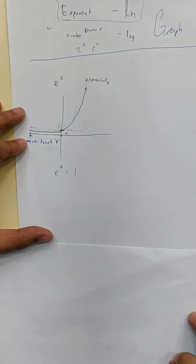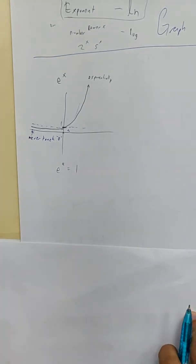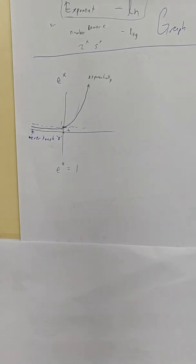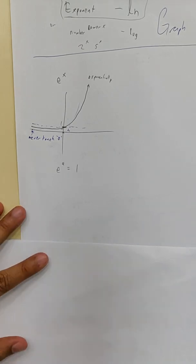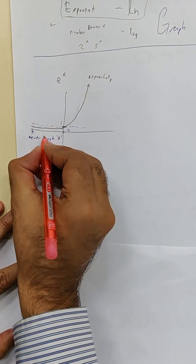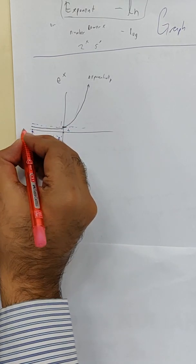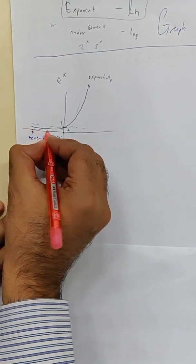So, the characteristics of e^x: the y-intercept is one, it rises exponentially, and it never touches zero. There's a new term for you — the line it never touches. That line is the forbidden line, and it is horizontal.